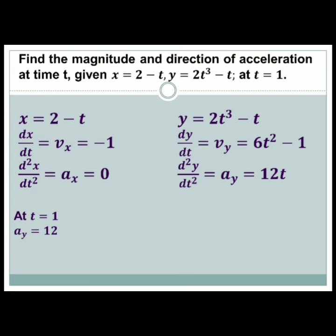At t equals 1, ay equals 12. For y equals 2t³ minus t, dy/dt equals 6t² minus 1, then d²y/dt² equals ay equals 12t.